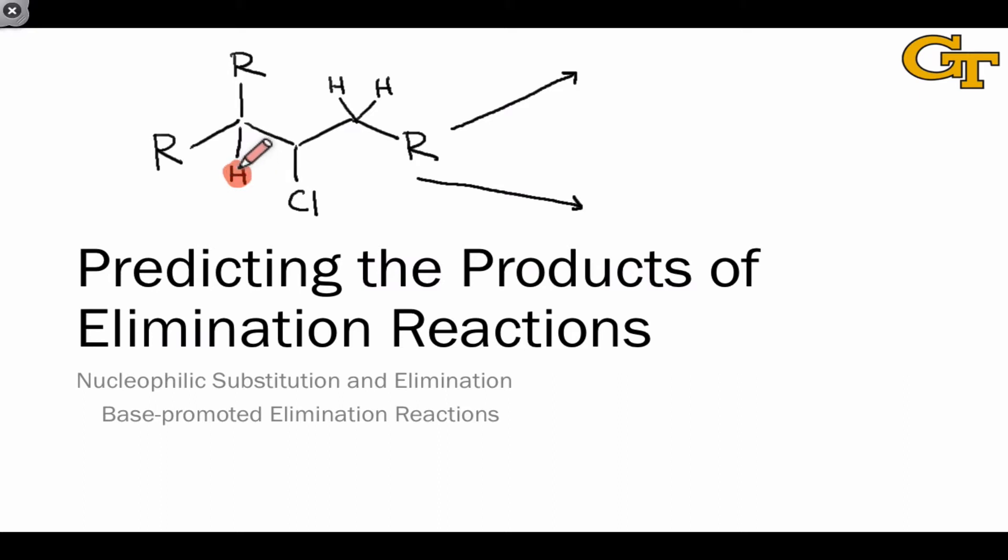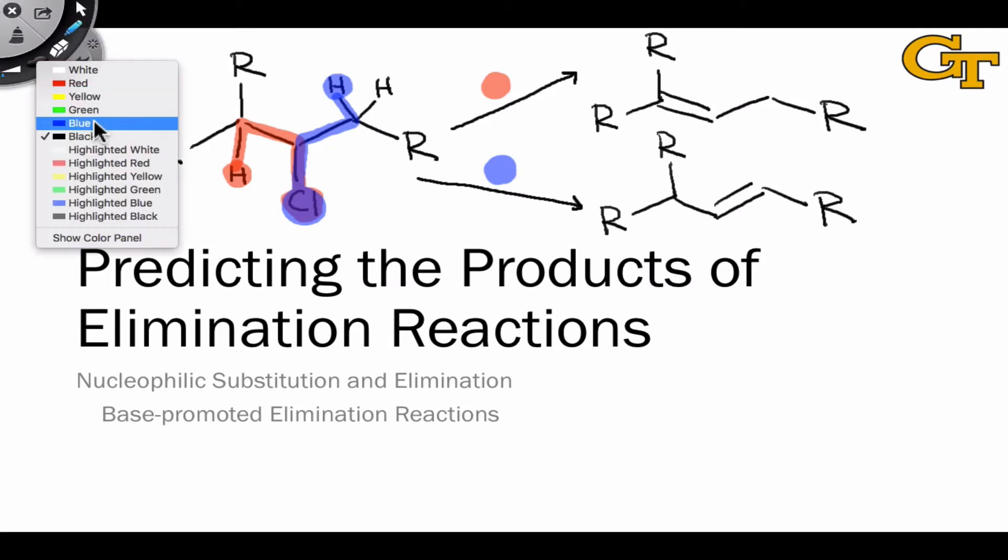One involves the elimination of the methane proton along with chloride, resulting in the formation of this alkene. The other involves elimination of a methylene proton at this carbon, and this reaction pathway leads to a different isomeric alkene containing the double bond in a different position. By the end of this video, you'll understand how to predict the major product here, and more importantly, you'll understand the underlying principle at the heart of making this determination.